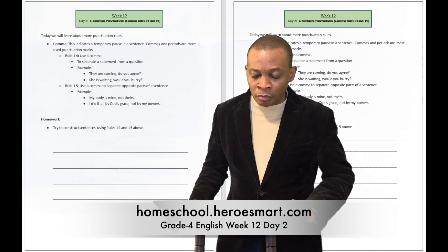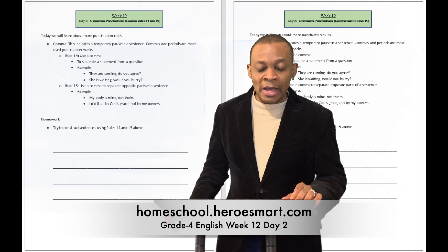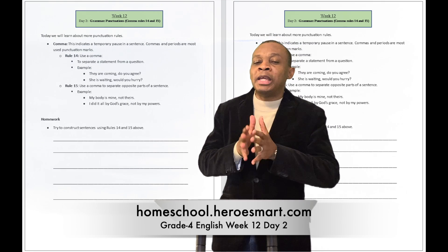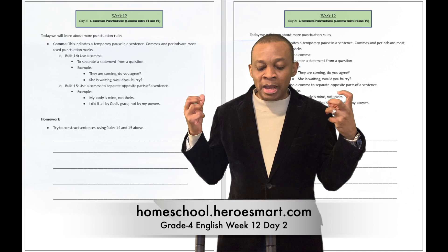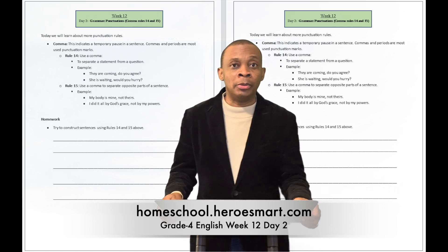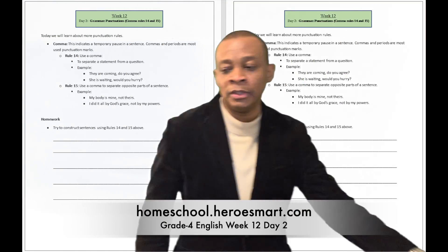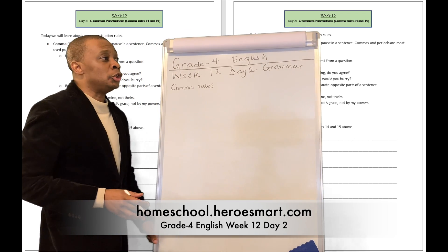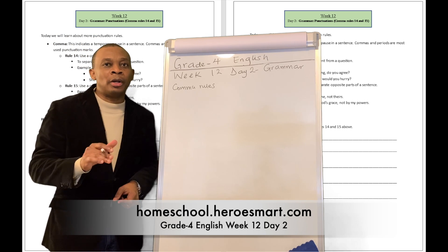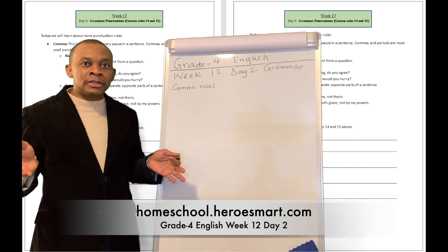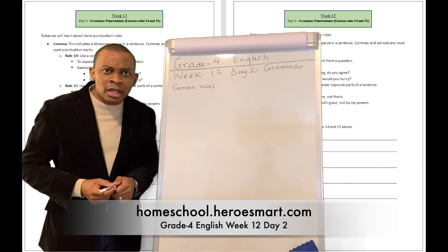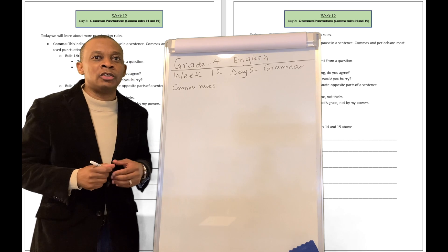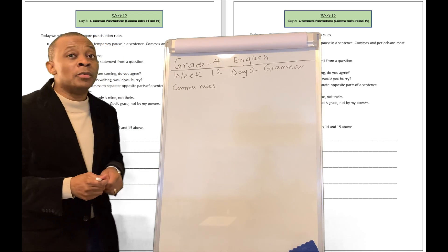Today in our grammar lesson, we're going to be learning a few more rules about the use of commas. We've been talking about punctuation marks — they're going to have rules around them, how to use them. We talked about a couple of rules already, and we are going to be adding additional rules to our memory banks today by the grace of God. A comma is a punctuation mark that you use to indicate a temporary pause in a sentence. Permanent pauses are indicated by periods. But if I just want a temporary pause, we use commas.